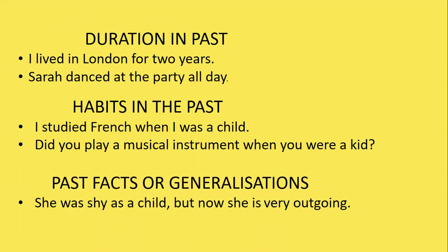Then comes past facts or generalizations. For example: 'She was shy as a child but now she is very outgoing.' Being a shy child was a past fact — she is no longer shy, she is very outgoing. This usage is similar to 'used to.'